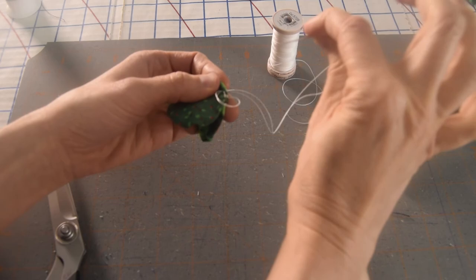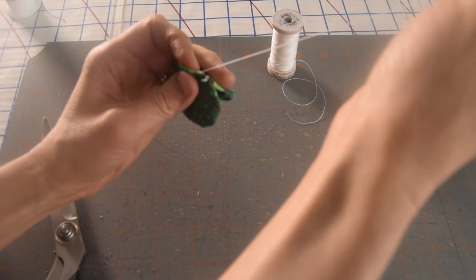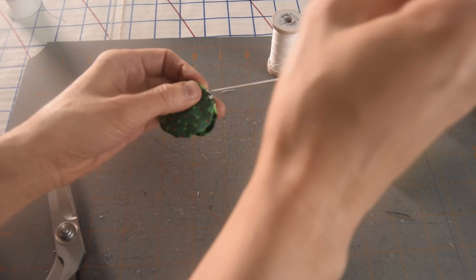And then I'm going to stick my needle in going away from myself. And before I bring this all the way to the end, I'm going to stick my needle through this loop back towards myself. So what this does is make like a little tiny, my stitch is kind of sitting on top. This is just a little blanket stitch.